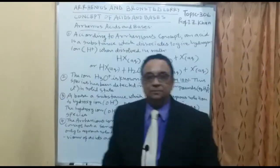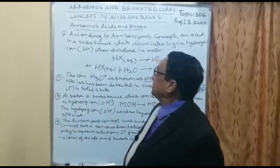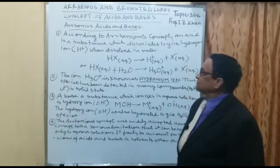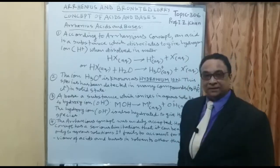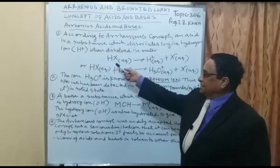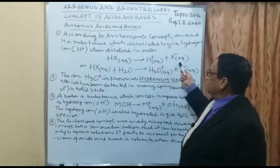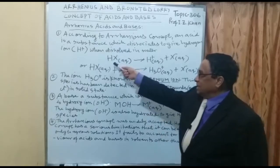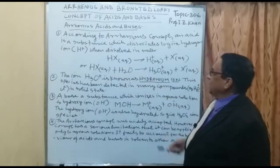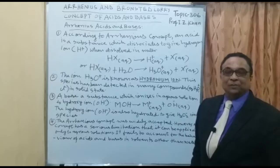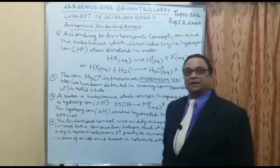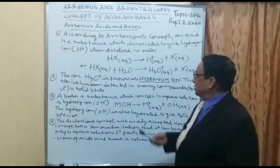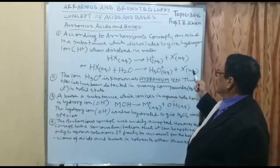Now the Arrhenius acid-base concept. Number one: according to Arrhenius, an acid is a substance which dissociates to give hydrogen ion H⁺ when dissolved in water. An example is HX(aq) giving H⁺(aq) and X⁻(aq). H⁺ is not found in free state; it associates with one molecule of water and is hydrated, forming the hydronium ion H3O⁺(aq) plus X⁻(aq).